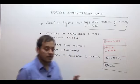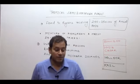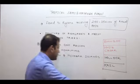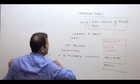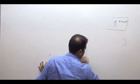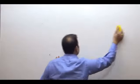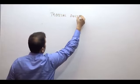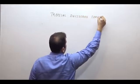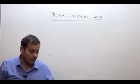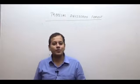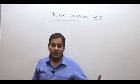Now let us move to the next forest type: the deciduous type of forest. There are two types of tropical deciduous forest — moist deciduous and dry deciduous. I will continue in the next lecture. Thank you very much.